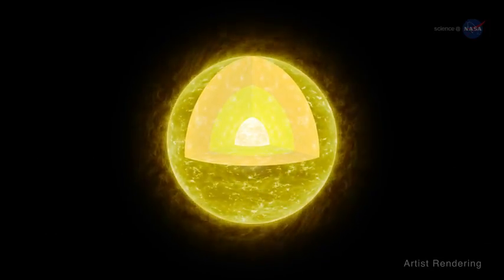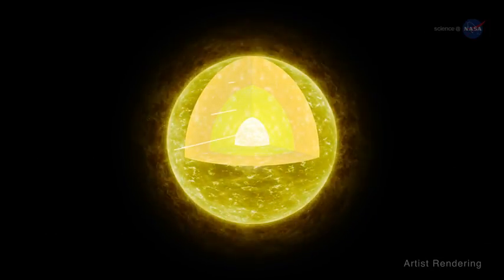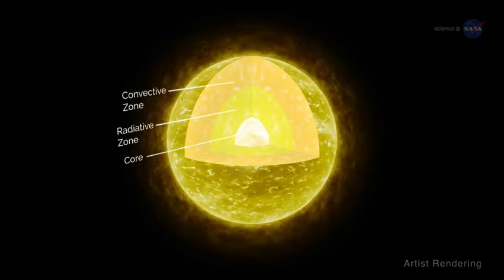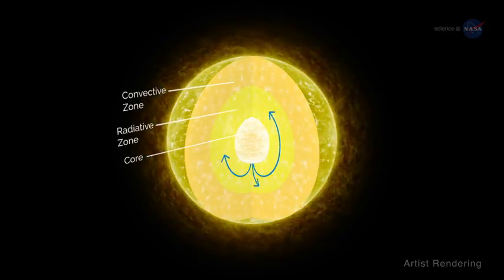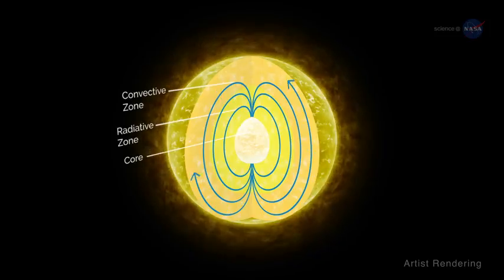Astro-seismologists analyze brightness fluctuations to study the interior structure of stars, including the strength and distribution of magnetic fields deep below the stellar surface.